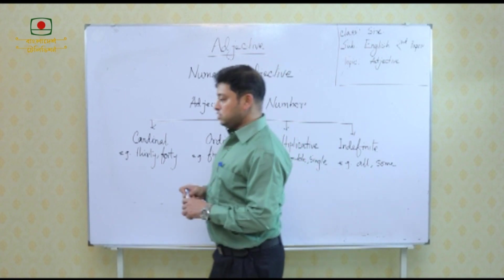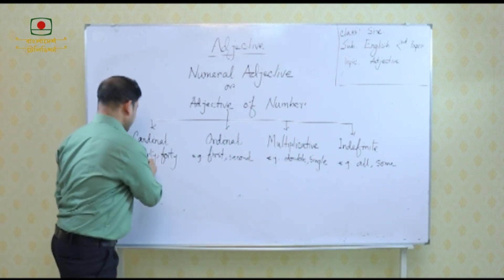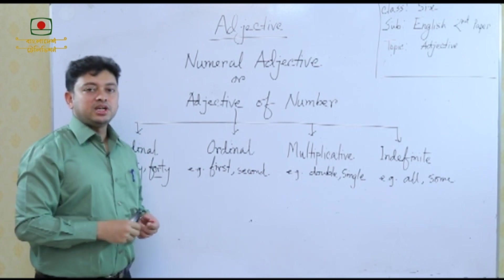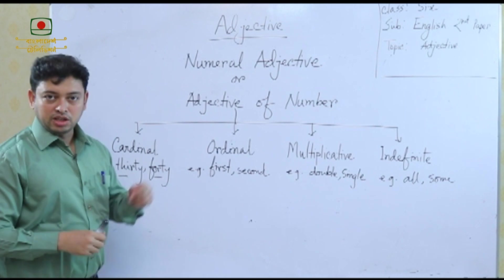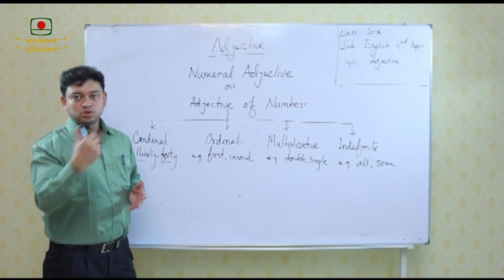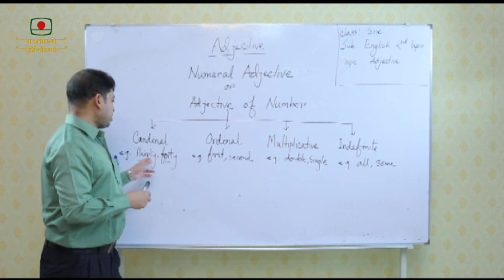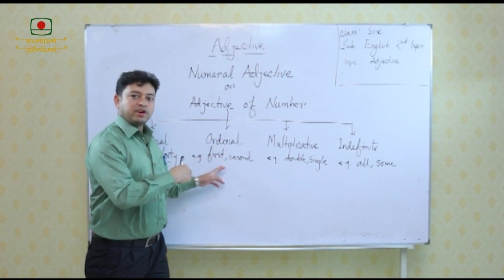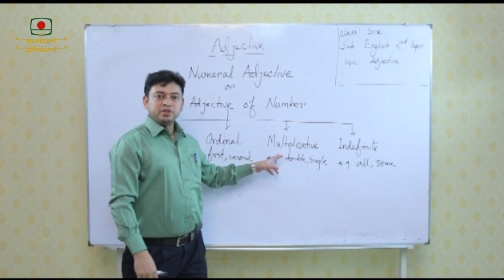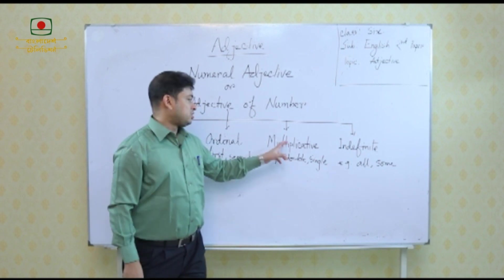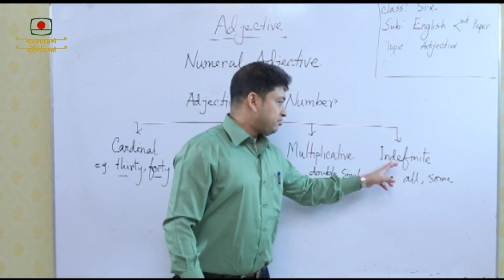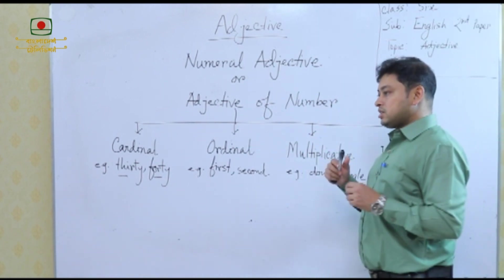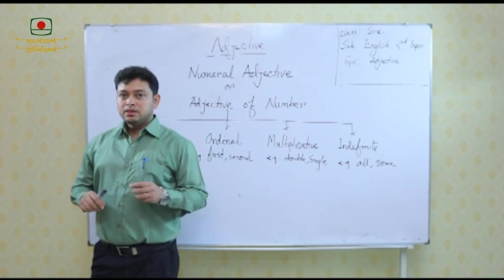When these words are used in a sentence and qualify a noun, they become adjective of number. For example, 'there are 40 students' — the word '40' qualifies 'students', so it is a cardinal numeral. When 'first' qualifies a noun it is ordinal; 'double' qualifying a noun is multiplicative; and 'all' qualifying a noun is indefinite numeral.